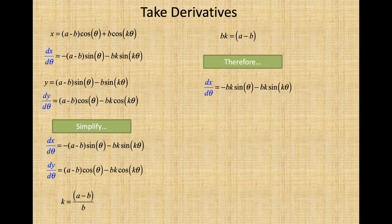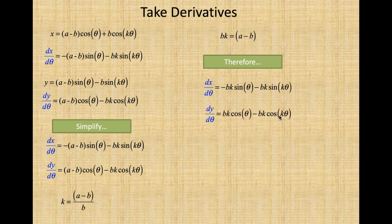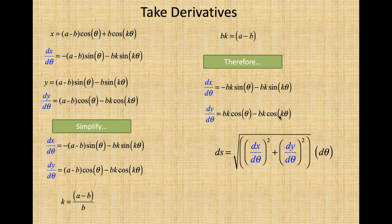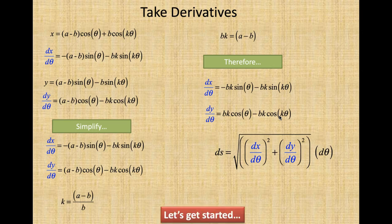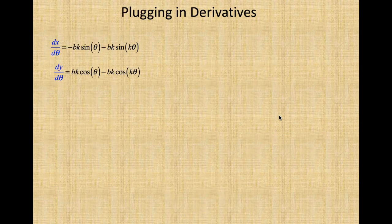So dx/dθ is equal to — we will replace a minus b with bk, and also in dy/dθ. So we have ds equals the square root of (dx/dθ)² plus (dy/dθ)² times dθ. Let's get started.